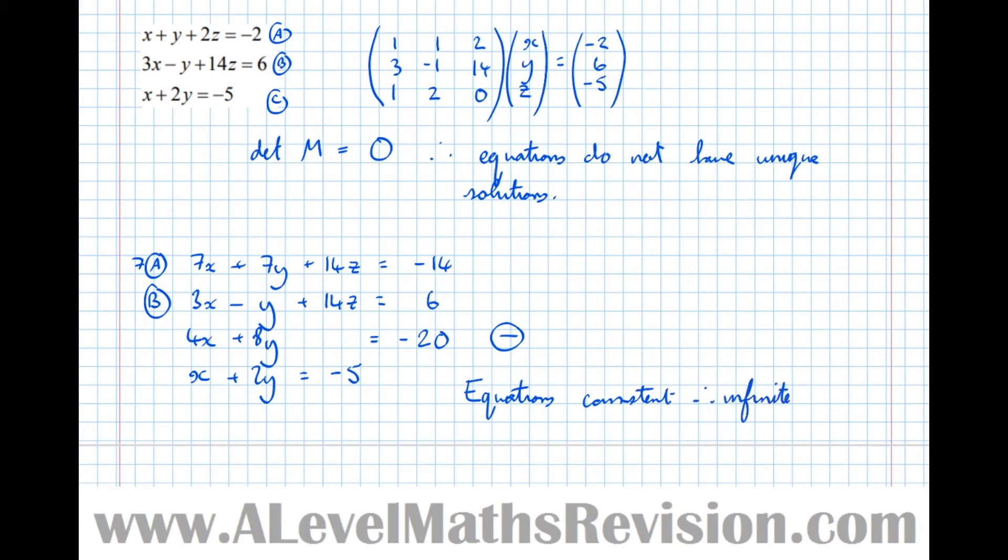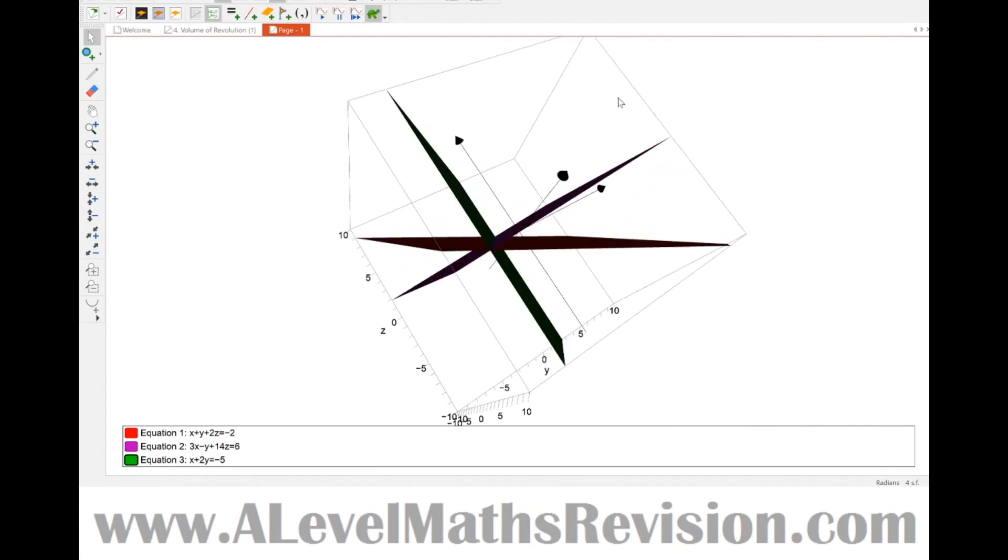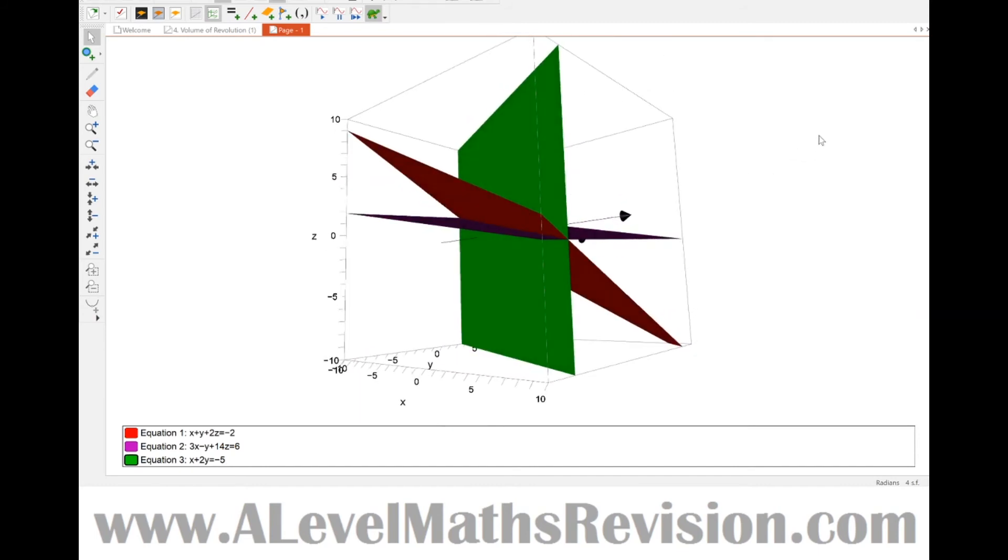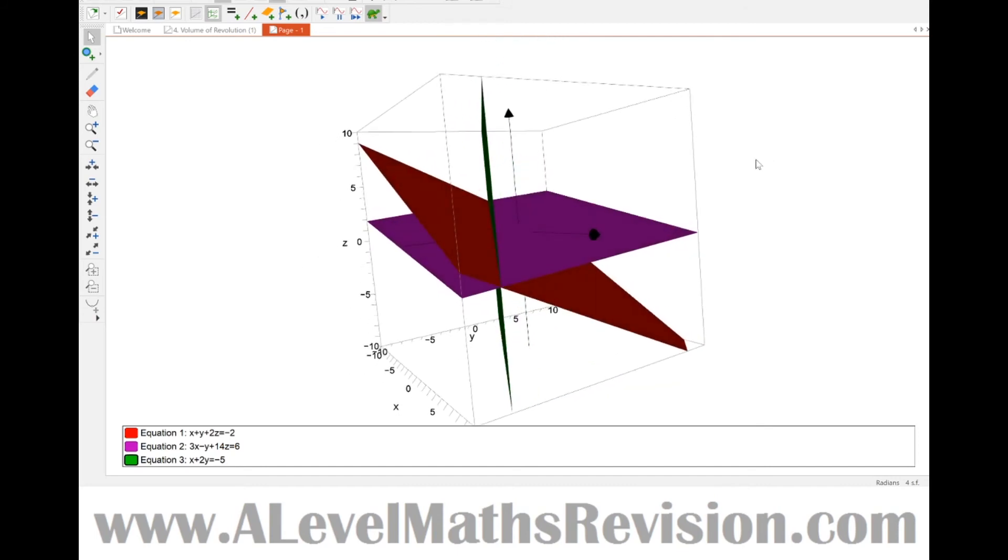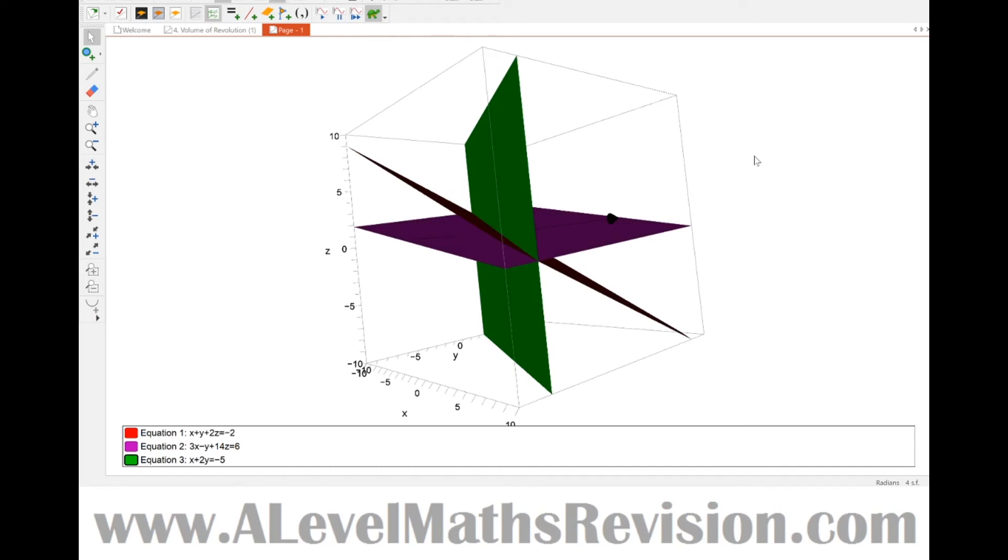So therefore there's an infinite number of solutions. So the conclusion here is equations consistent, therefore infinite number of solutions. So in the practical context of talking about these as the equation of planes, there's an infinite number of points at which all three planes intersect each other. And that can be illustrated here, so we can see here if I turn this around, all three planes intersect along a line. So there's an infinite number of points at which those three planes, all three of them, intersect.